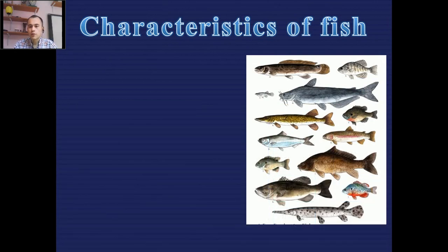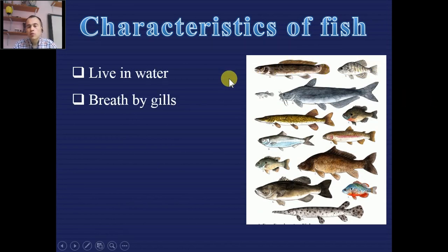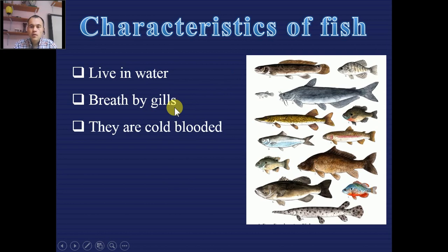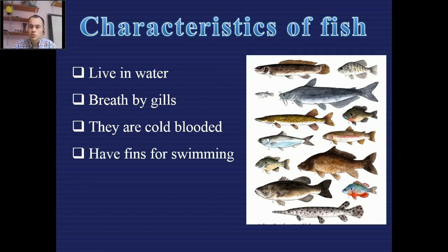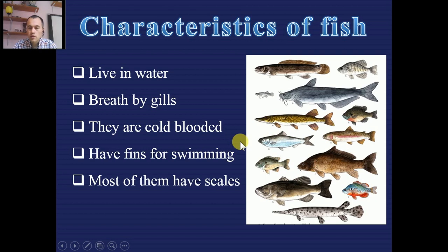The first group is fish. Fish live in water, so all of them use their gills to respire or breathe. They are cold-blooded, meaning they depend on the water temperature — if the water is cold their body becomes cold, and if warm, their body becomes warm. They can't control their body temperature. They have fins for moving, turning, and making easy turns. Most fish also have scales that help their body move through the water very fast.